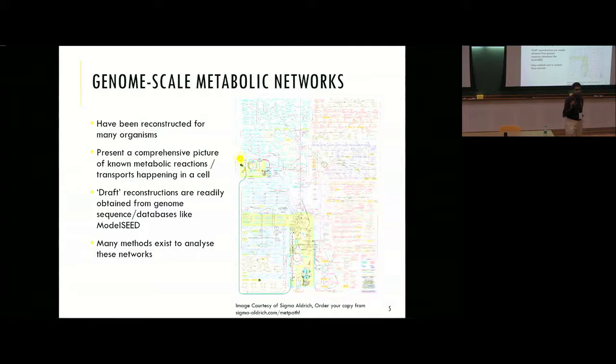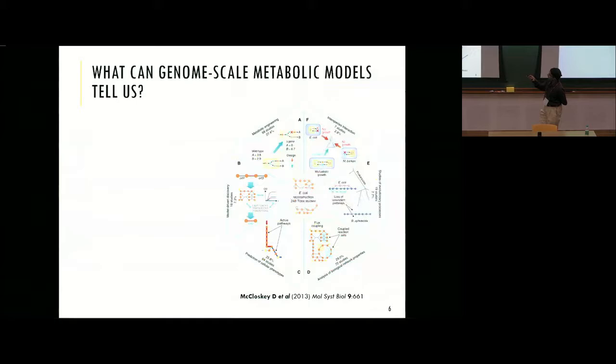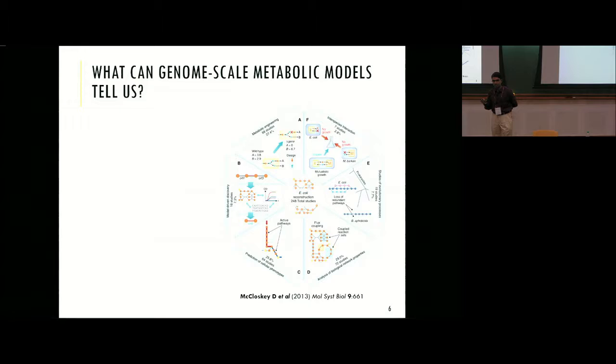There are many draft reconstructions — you just feed in the genome sequence and out comes a draft reconstruction. They are not very accurate but good enough for many purposes. There are many methods to analyze these networks. What can genome-scale metabolic models tell us? This is a very classic paper. At the center is the E. coli reconstruction by Adam Feist in 2008, and they already reported 250 different studies on just the E. coli model.